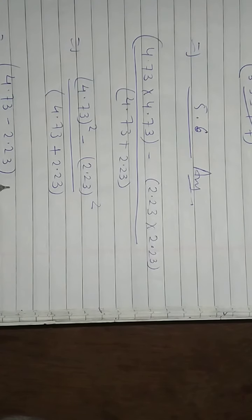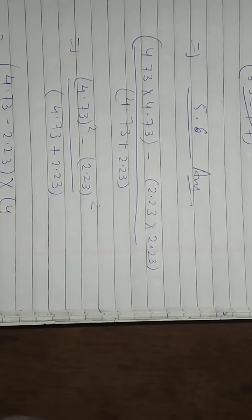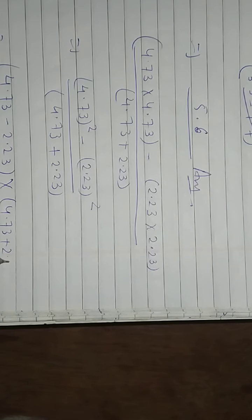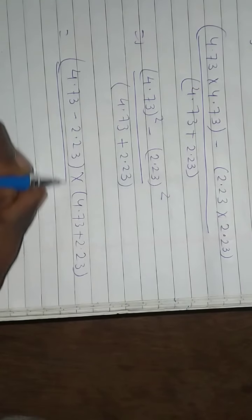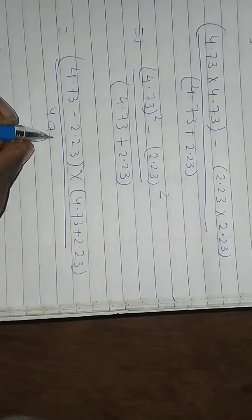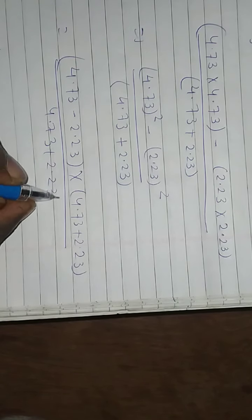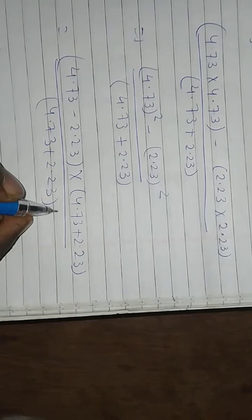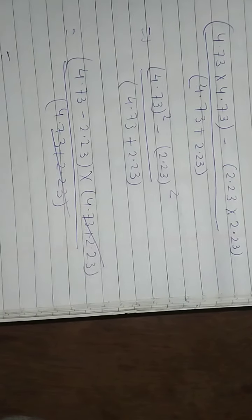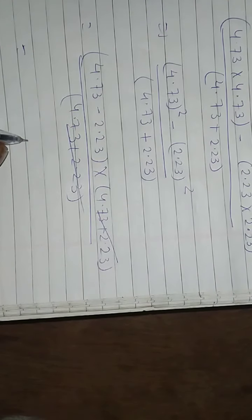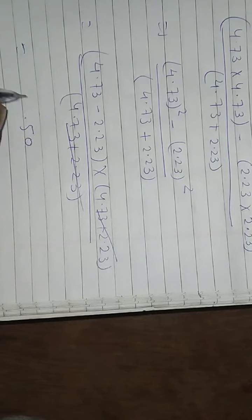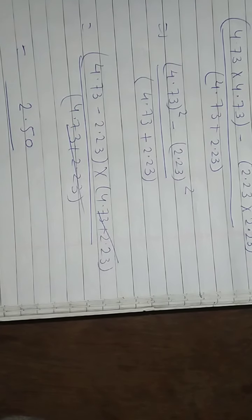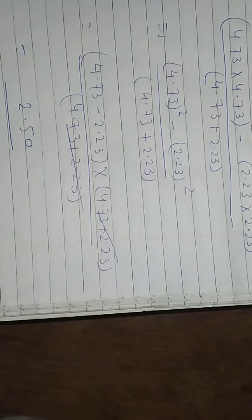Firstly subtract, then add 2.23. Upon 4.73 plus 2.23 — this term will cancel this term. So: 3 minus 3 is 0, 7 minus 2 is 5, 4 minus 2 is 2. So here the answer is 2.50.